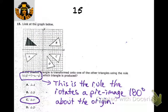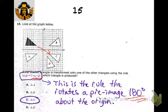We're looking for the triangle that would fit that rule — again, the rule is the 180-degree rotation about the origin. So that's clearly C.